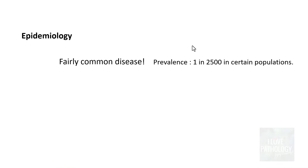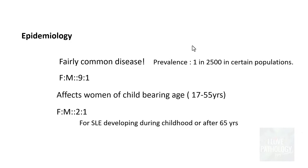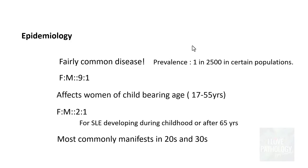A bit about epidemiology: SLE is a fairly common disease with a prevalence of around 1 in 2500 in certain populations. It predominantly affects females, with a female-to-male ratio of around 9:1 in women of childbearing age (17–55 years), dropping to around 2:1 for SLE developing during childhood or after age 65. The disease most commonly manifests in the 20s and 30s, though it can occur at any age.